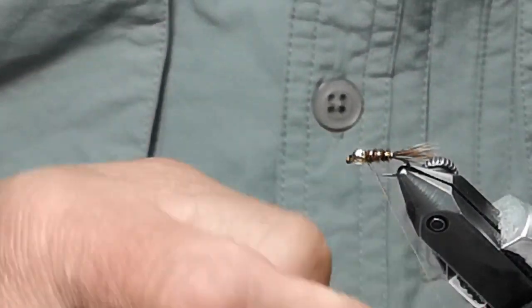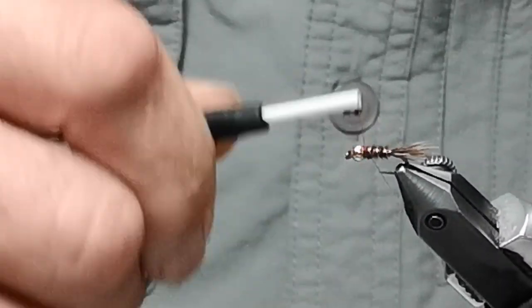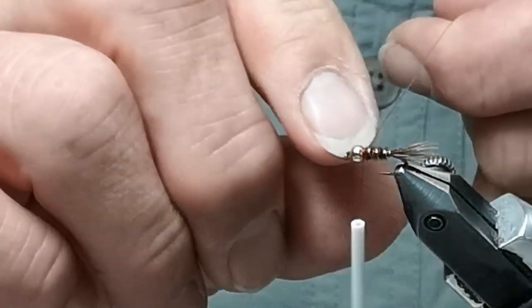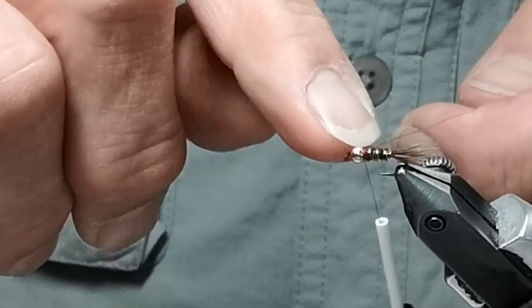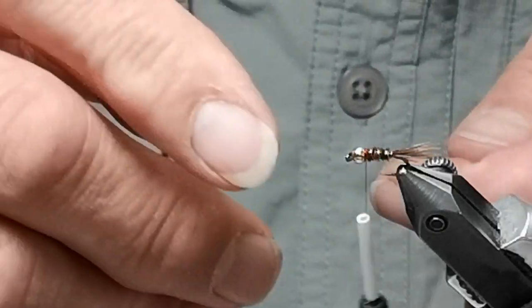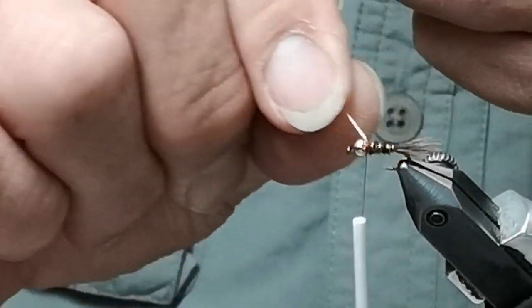Then you can just grab your thread and wrap it in the same direction you're wrapping all your materials. It locks in the wire that you wrapped backwards. Because you did two wraps in front of the thread, I don't have to go over top like I normally do on this one.